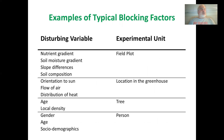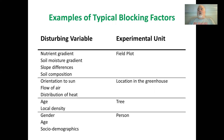Here are some examples of typical blocking factors: nutrient gradients, soil moisture gradients, slope differences, and soil composition. Sometimes you have a nutrient gradient in the field where one nutrient changes across the field, leading to a field plot experiment in that area. Orientation to the sun, flow of air, and distribution of heat are disturbing variables you might find in a greenhouse. Greenhouses are supposed to be totally uniform but they never are — closer to the cooling pads, along the north or south wall, near the door, near the vents — there are so many differences.